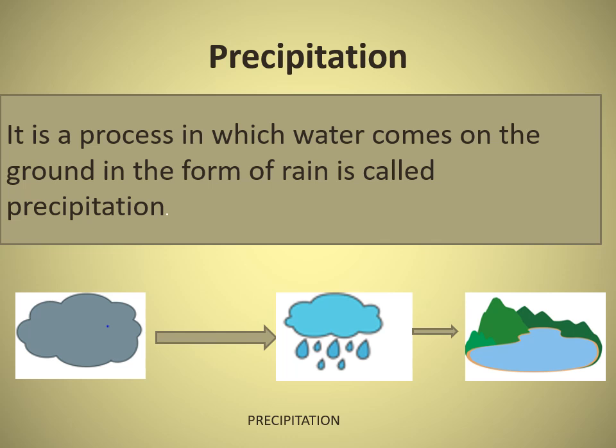Precipitation: It is a process in which water comes on the ground in the form of rain, and it is called precipitation.